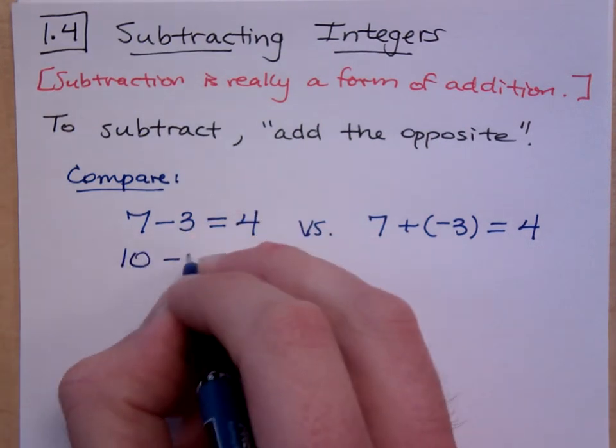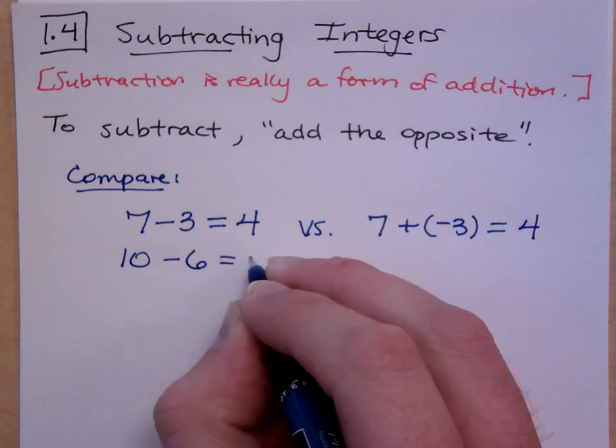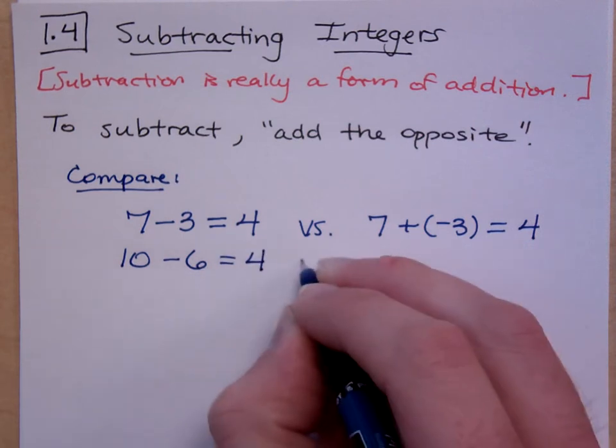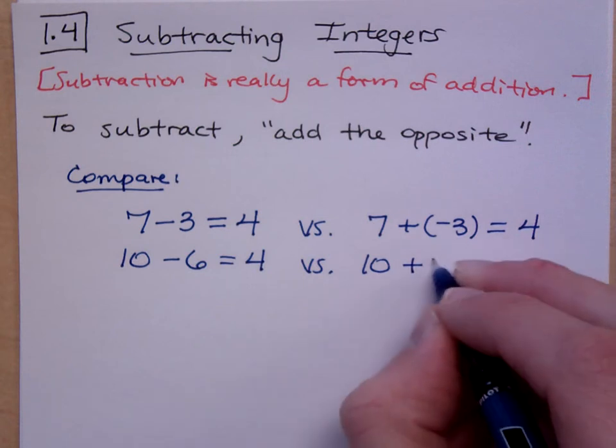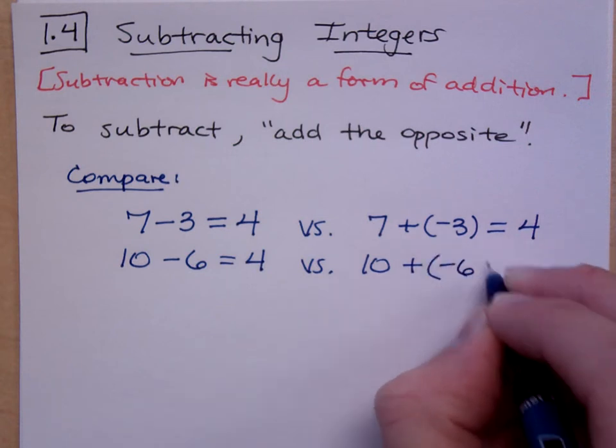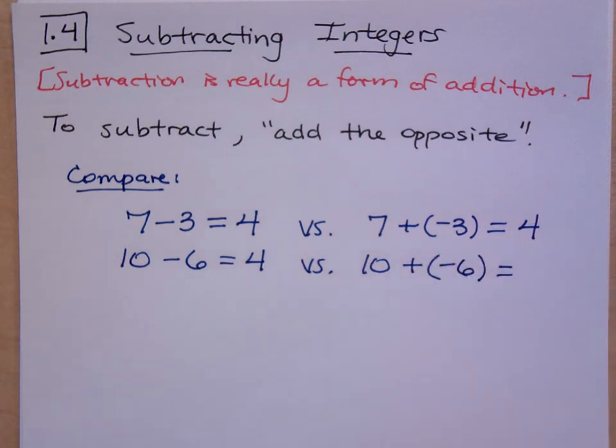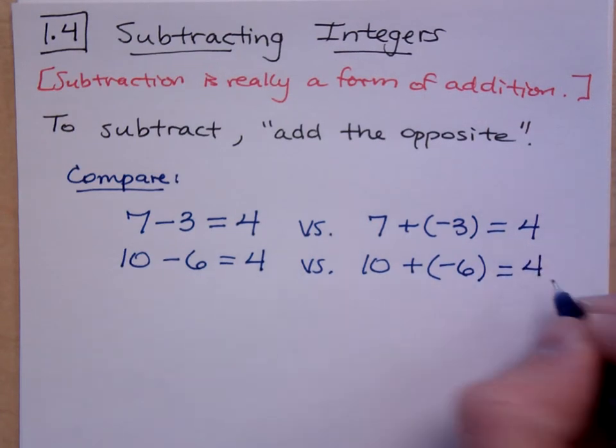If I have 10 minus 6, well, that still is 4, right? If we look at this as 10 plus, what's the opposite of 6? Negative 6. What's 10 and a negative 6 when you add those guys? Positive 4.